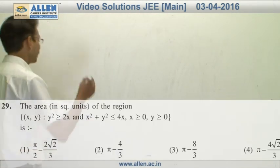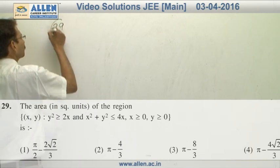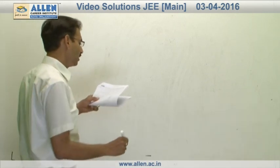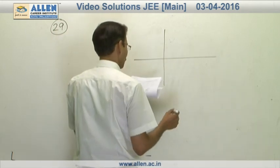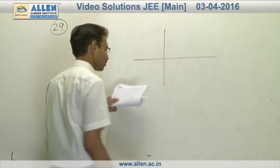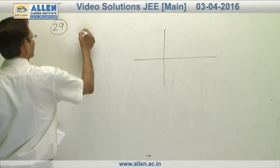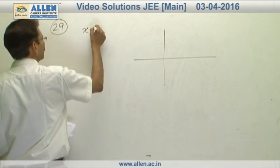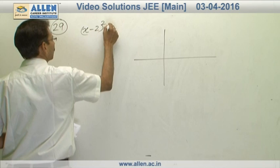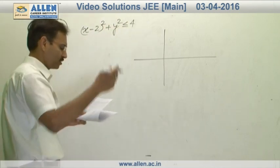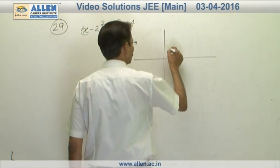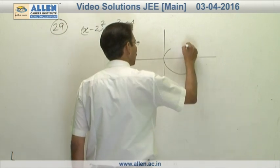In question number 29, let us sketch the regions first. I will sketch the circle because x square plus y square less than equals to 4x basically represents x minus 2 whole square plus y square less than equals to 4. So the portion inside the circle whose centre is 2 comma 0 and radius is 2.